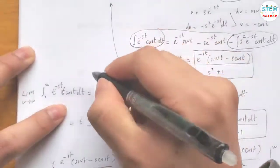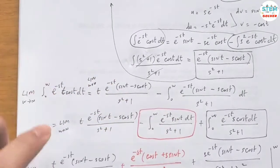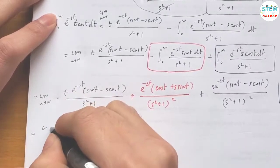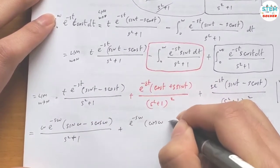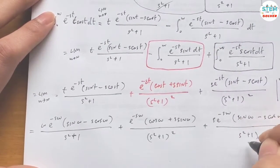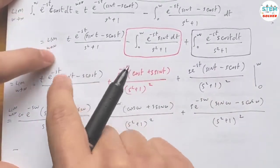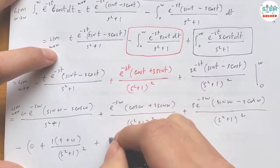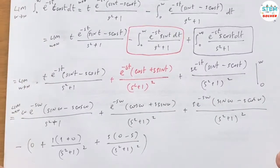We need the limit as w goes to infinity of all these terms. Plugging in w gives terms like w·e^(-sw), e^(-sw)·cos(w), e^(-sw)·sin(w), each multiplied by various factors. Plugging in 0 gives: e^0 = 1, cos(0) = 1, sin(0) = 0. By the definition of the Laplace transform, for s > 0 we need these to converge.